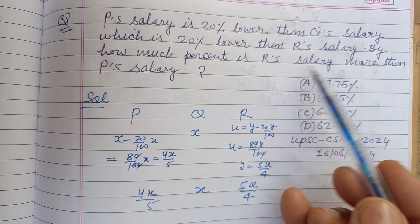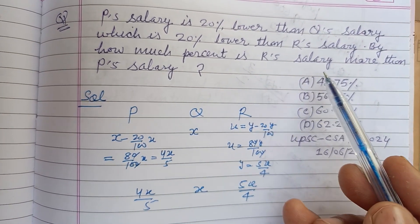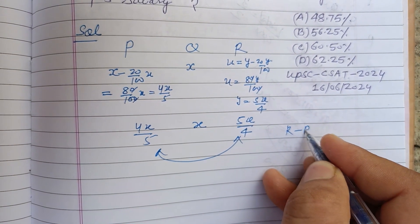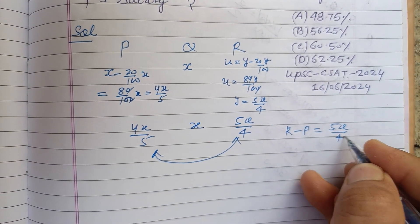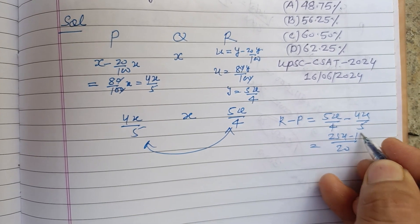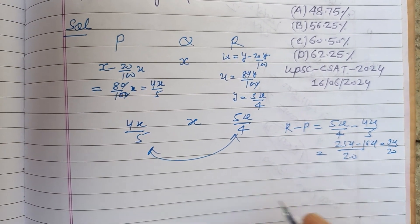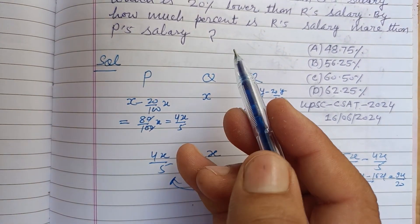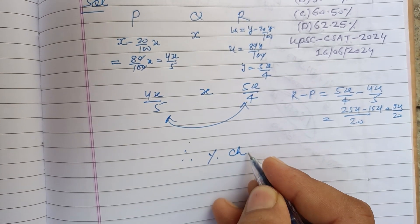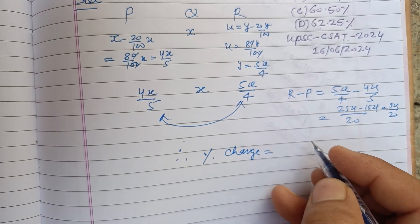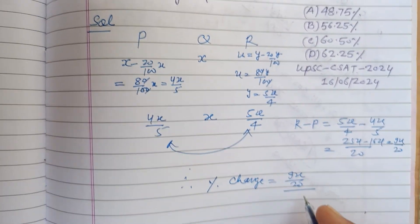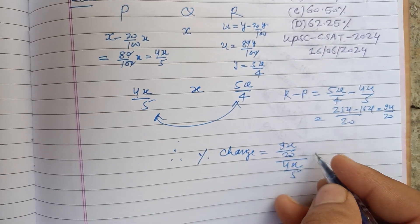Now the question is asking: how much percent is R's salary more than P's salary? So we find the change between R and P. R minus P is 5X upon 4 minus 4X upon 5, which gives 25X minus 16X over 20, that is 9X upon 20. And we compare this with P's salary, so percentage change equals 9X upon 20 divided by 4X upon 5, multiplied by 100.